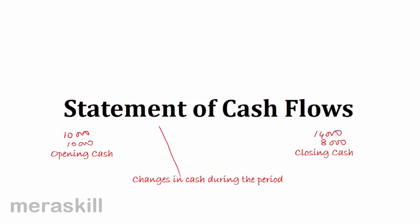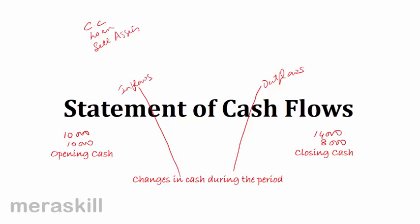Cash flows may be inflows or outflows. When does cash come in? Capital contribution — cash will come in. You take a loan — cash will come in. You sell old assets like furniture. Net profit: if you have purchased stationery and you sell stationery and make a profit, those transactions in cash would normally increase your cash balance.